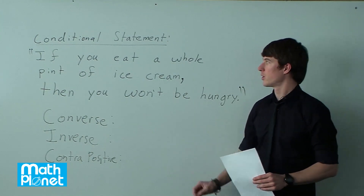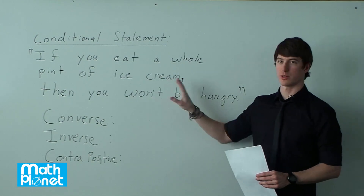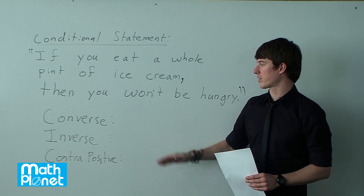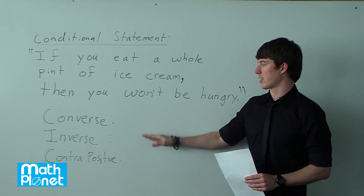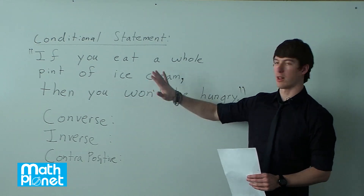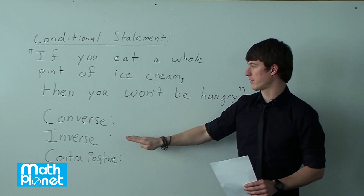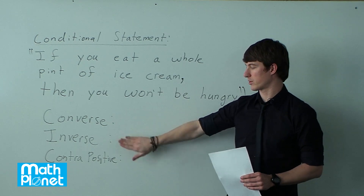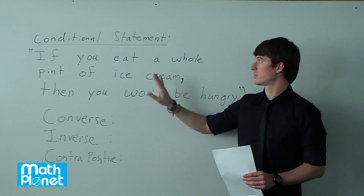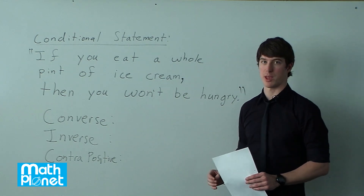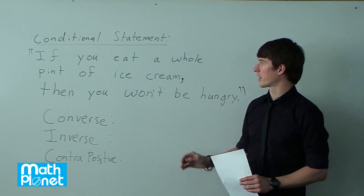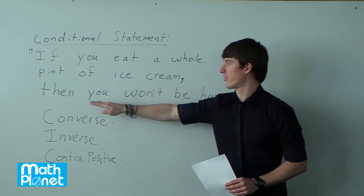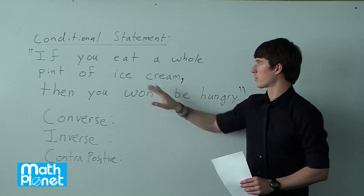Here we have a little bit more logic. We have a conditional statement, and we want to say if-then statements that allow this to always be true, but we also want to look at if-then statements that are converse, inverse, and contrapositive to this conditional statement. The conditional statement says we have some condition, and then this is the statement here.